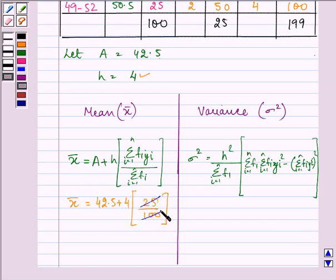So on simplifying, we have the mean as 42.5 plus 1, giving us the answer as 43.5.